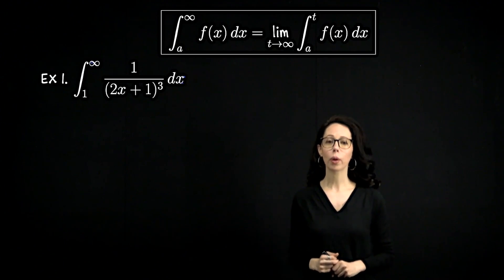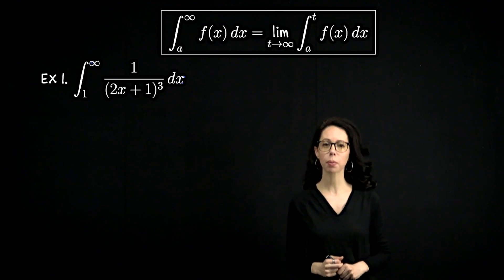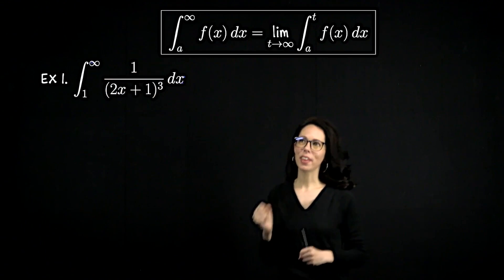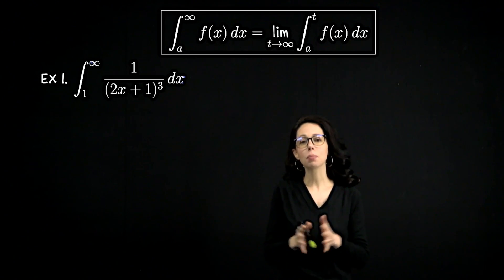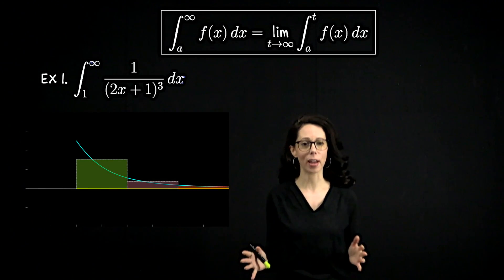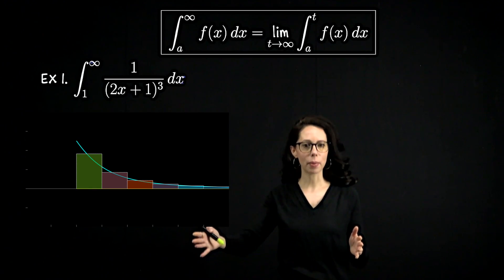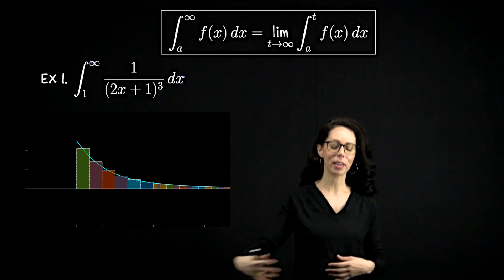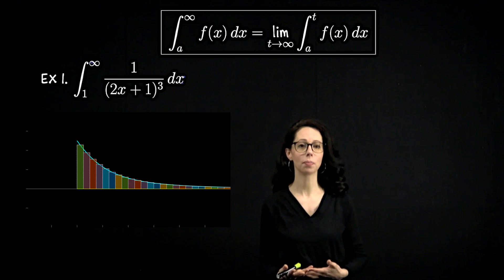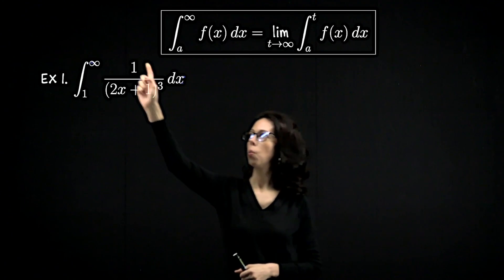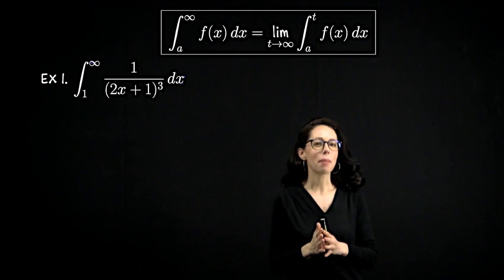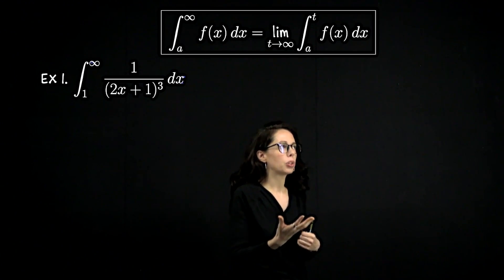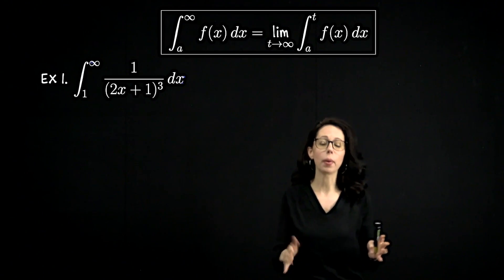Let's start with this example. We would like to integrate 1 over the quantity (2x+1)³ over the domain from 1 to infinity. The thing about Riemann integration is that we subdivide the domain into subintervals, estimate the area under the curve using rectangular areas, add those up, and let the number of rectangles go to infinity. But whenever one of the bounds is infinite, you can't subdivide the entire domain — the number of subintervals must be finite in that moment, and then you take a limit.